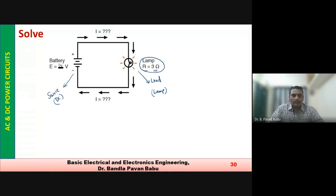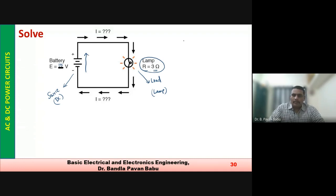If the current value is positive, the assumed direction is correct; if the result is negative, the direction is opposite. In single phase supply, phase and neutral have current flowing in opposite directions. For DC, if one conductor is positive and the other negative, the current direction is fixed when the load is connected — the magnitude remains the same, only the sign changes.